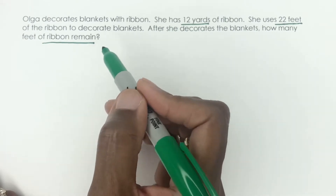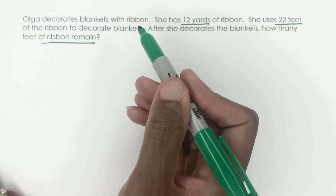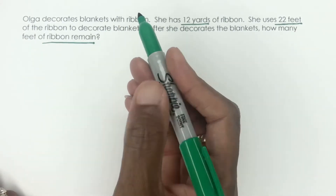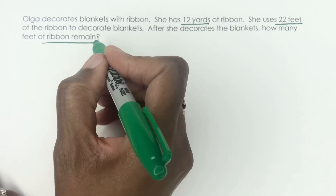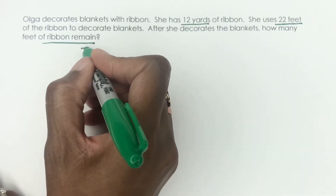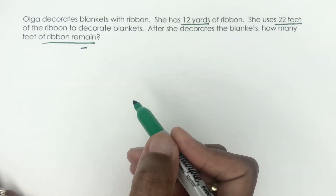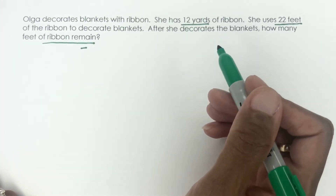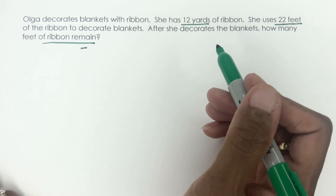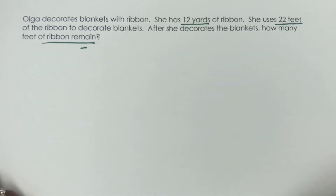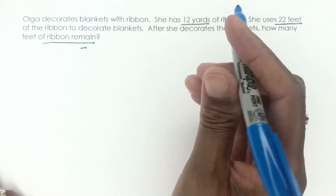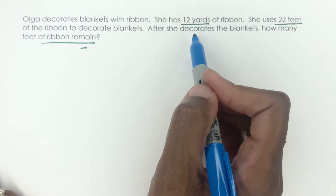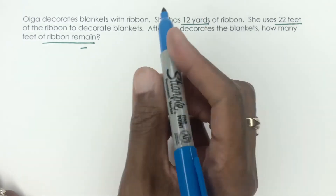When a problem says 'how many is left over,' 'how many remain,' that's a signal we're going to be using subtraction at some point in this calculation. So the first thing we have to do is change our yards to feet. Let's do that conversion.